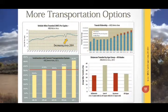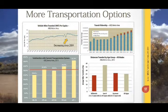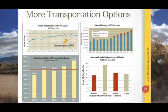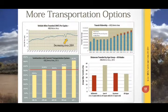Transportation options are also shifting in our region. The amount we all travel by car is actually decreasing and has been decreasing since 2004. This follows a national trend, but it's true locally. At the same time, transit ridership — both by bus and also by the Rail Runner — has increased dramatically.